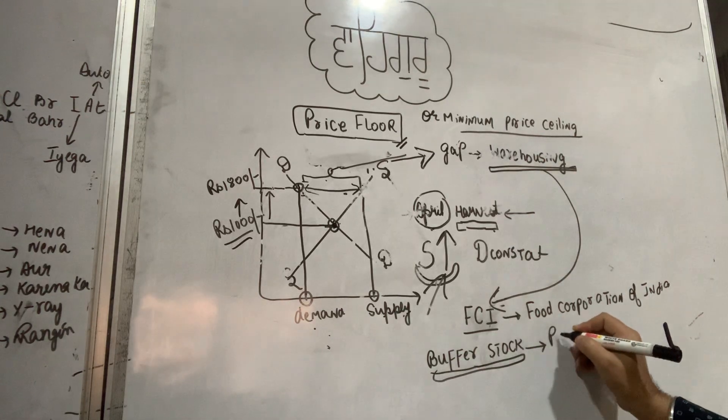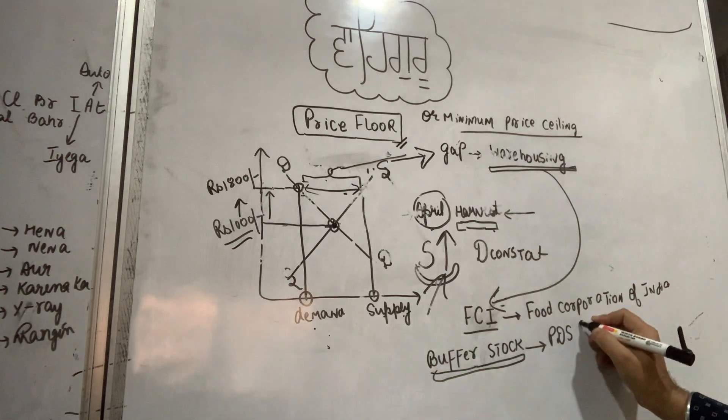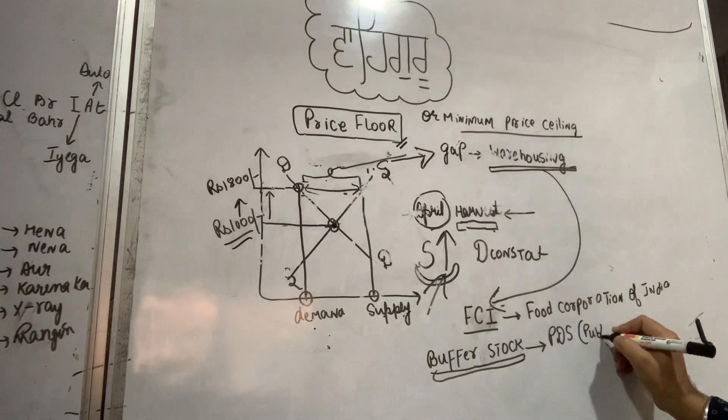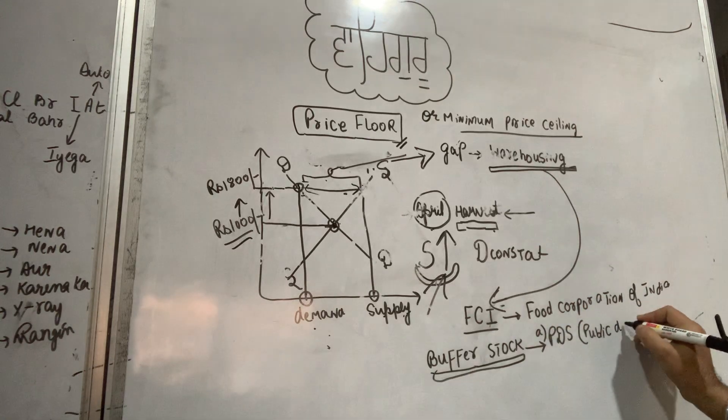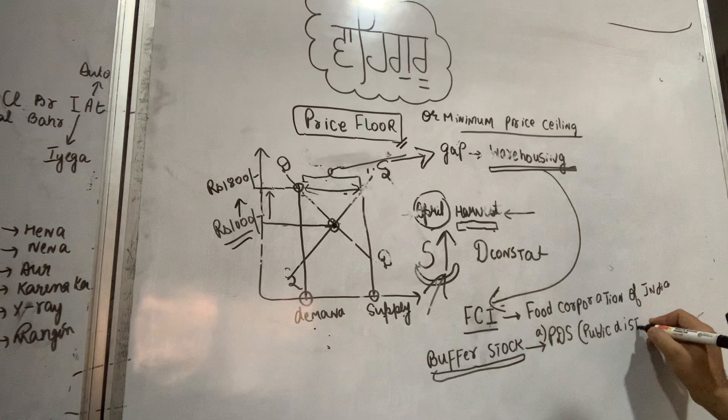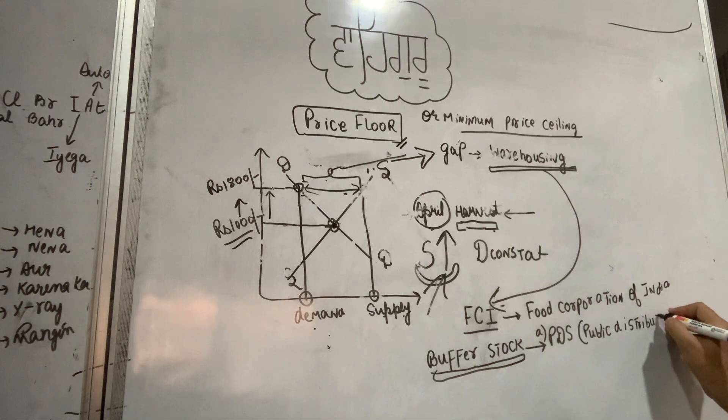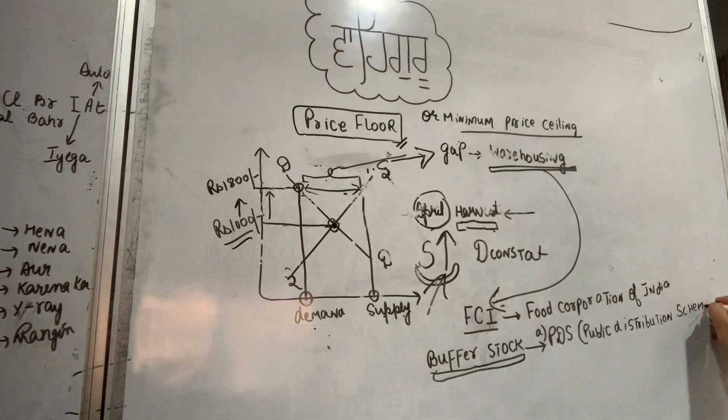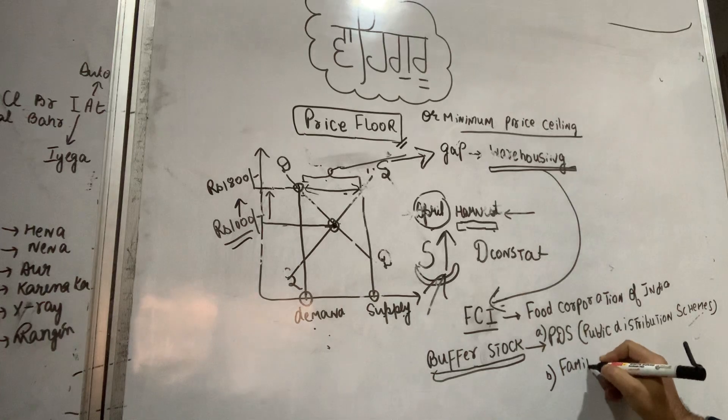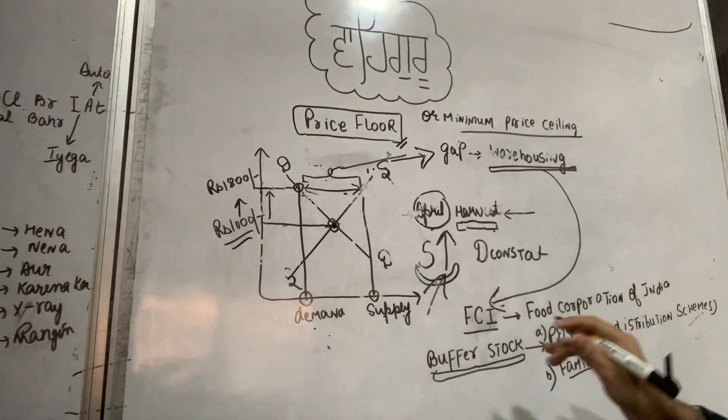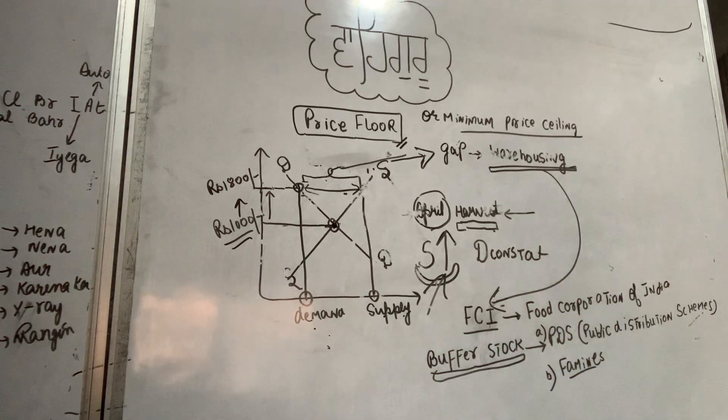Through public distribution scheme, PDS - public distribution scheme is used. Public distribution scheme means ration depots where below poverty line people get subsidized rations. It's used in public distribution schemes. And second, if there's famine, buffer stock is used. If suppose there's hunger or floods somewhere, or food shortage occurs, then all that buffer stock material is sent there.